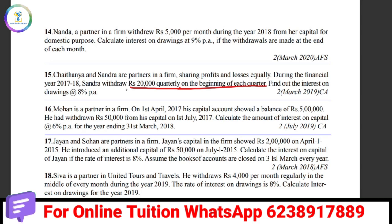For this quarterly withdrawal, the equation is: amount Rs. 20,000 × 12.